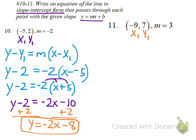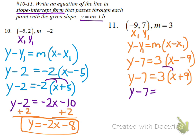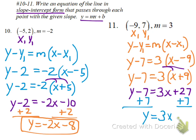Label our points x-sub-1, y-sub-1. Point-slope: y minus y-sub-1 equals m times x minus x-sub-1. Substitute in: y minus 7 equals 3 times x — minus is from the formula — x-sub-1 is negative 9. We'll rewrite that minus negative as plus positive, then distribute to get rid of the parentheses. 3 times x is 3x, 3 times 9 is 27. To get y by itself and get rid of the minus 7, add 7 to each side. 27 plus 7 is 34. So we got it in slope-intercept form.